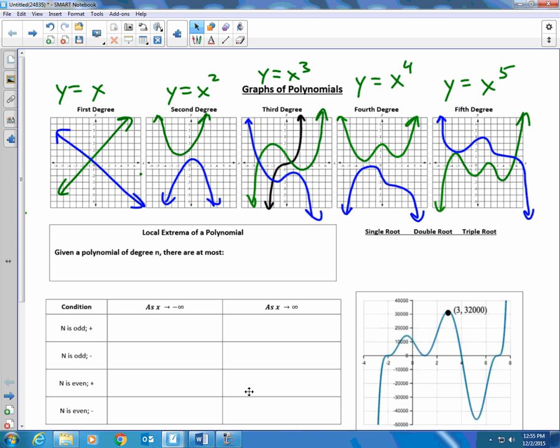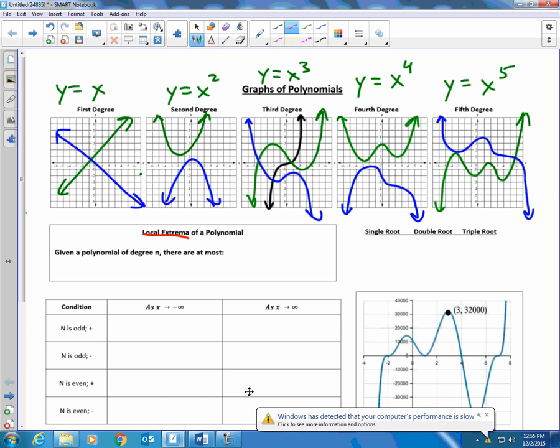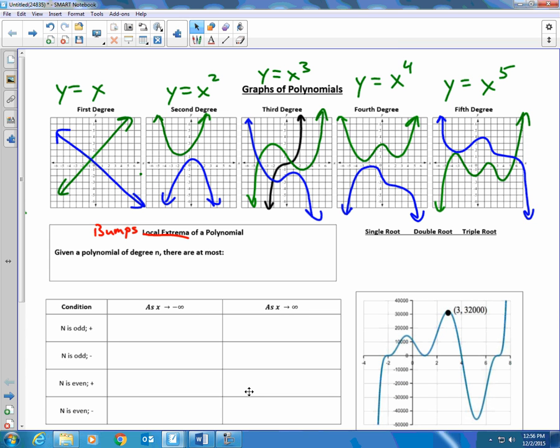We're going to use this drawing, and you really want to look at mine because I have the advantage of having colors, and you don't, in order to make some different conjectures about the behavior of these polynomial. We're going to start by talking about local extrema. Local extrema are the bumps in the graph. They are the local maximum, local minimum. Maxes and mins are extreme values. So they call them extrema.